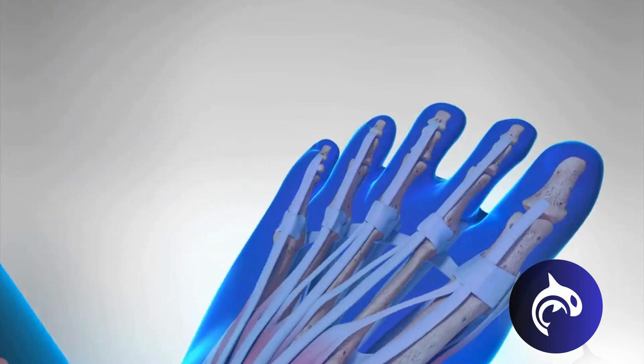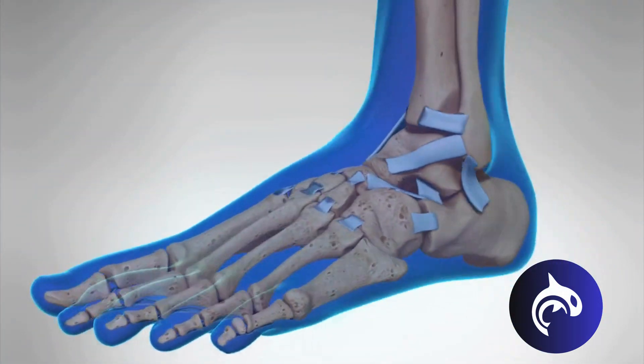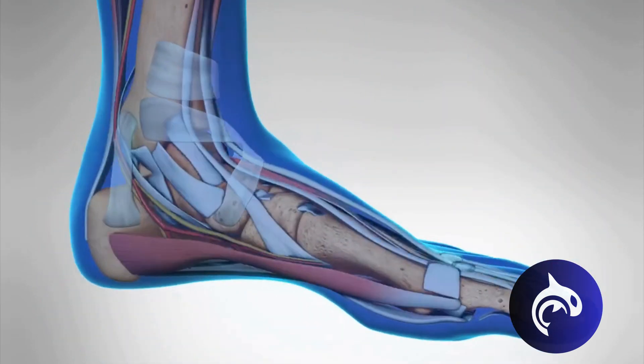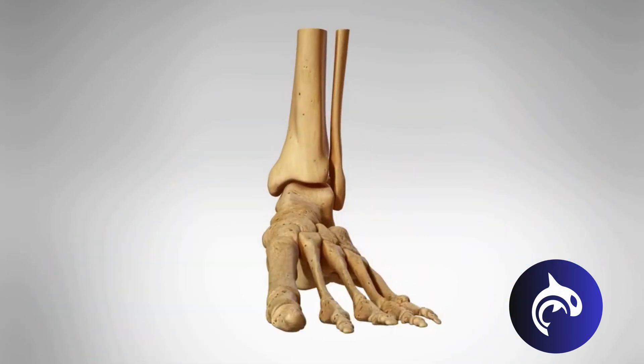The human foot is a complex structure comprised of 26 bones, 33 joints, over 100 muscles, tendons, ligaments, and nerves that work together to bear the full weight of our bodies and allow for locomotion.